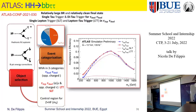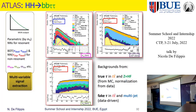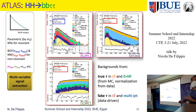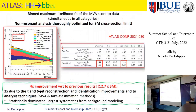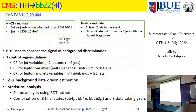Those two additional analyses are less sensitive than the first three, giving an expected limit of about 2.5 times the standard model prediction. Once we reach a limit of 1, and this will probably take all the statistics of Run 3, we become sensitive to the double Higgs production at least in the context of the standard model. We could then have evidence with 3 sigma, and with more data eventually observe the double Higgs production — this is the target for the high luminosity LHC.